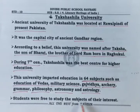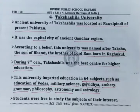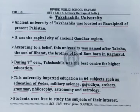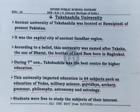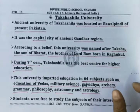Students were free to study the subjects of their interest. Children were given the freedom to study whichever subject they had interest in. It was not compulsory to study a fixed set of subjects. Whoever wanted to study whatever, they could do so. If someone wanted to specialise in chemistry along with music, they were allowed. Our new National Education Policy has also given this same freedom to students.